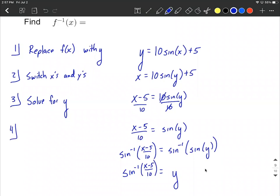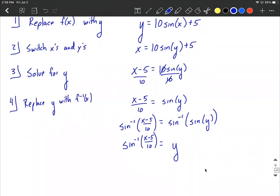The very last step here, step number four, is we're going to replace y with f inverse of x. So we've done all the real algebra here. Now we just have to indicate that our inverse function is instead of y over on the right hand side, f inverse of x. And we've completed our task. We found the inverse of f.